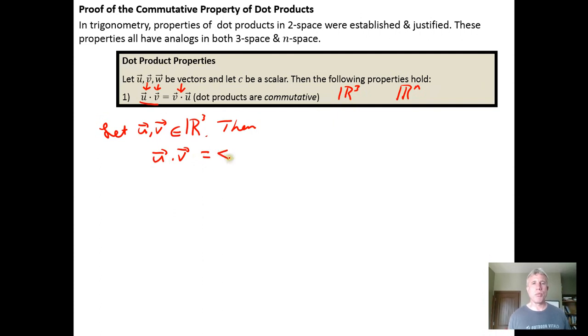So what does u dot v look like? Well, in R3, we know that the vectors are three component vectors. So u is going to look like u sub 1 comma u sub 2 comma u sub 3. And we would be dotting that with the vector with components v sub 1, v sub 2, v sub 3.